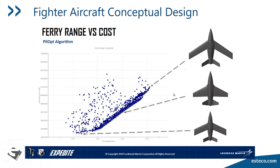Going into the aerospace domain, this was a very recent project out of Lockheed Martin Skunk Works called Expedite, sponsored by the Air Force Research Laboratory. They wanted to apply multidisciplinary optimization techniques to design a fighter aircraft. They had two objectives: ferry range, which they wanted to maximize, and cost, which they wanted to minimize. They converged to what we call a Pareto front, ending up with a number of trade-off solutions — some very good in ferry range but not on cost, others very good on cost but sacrificing ferry range.